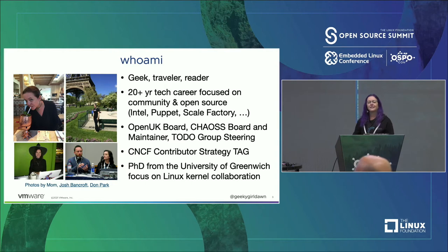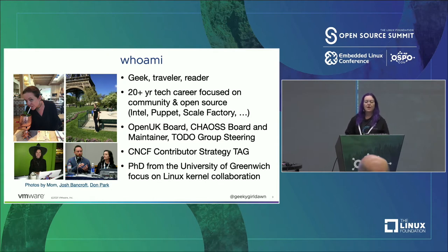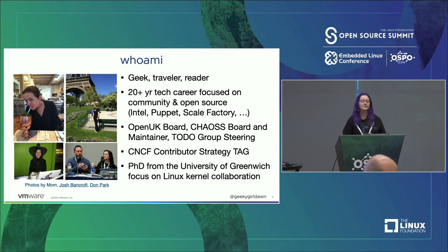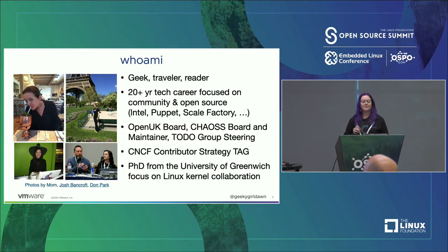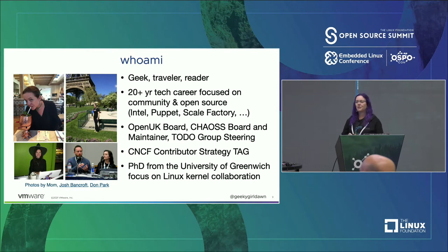I've been in the technology industry for over 20 years, working mostly on open source projects from within companies like Intel and Puppet, and now at VMware, where I'm responsible for our open source community strategy within the open source program office. I'm on the steering committee for the Linux Foundation's TODO Group, a board member of Open UK, a governing board member and maintainer for the Linux Foundation's CHAOSS Project, and I have a PhD from the University of Greenwich, where I researched how people collaborate in the Linux kernel.